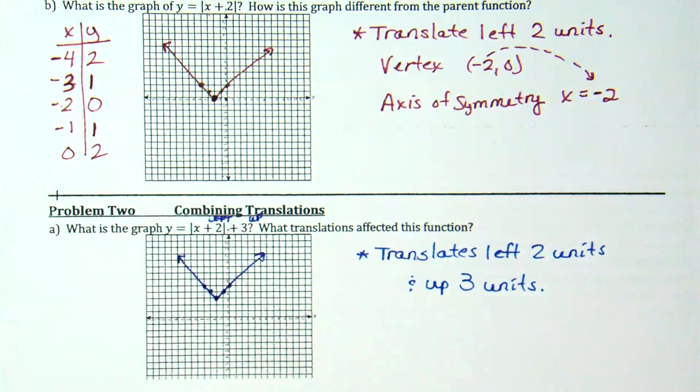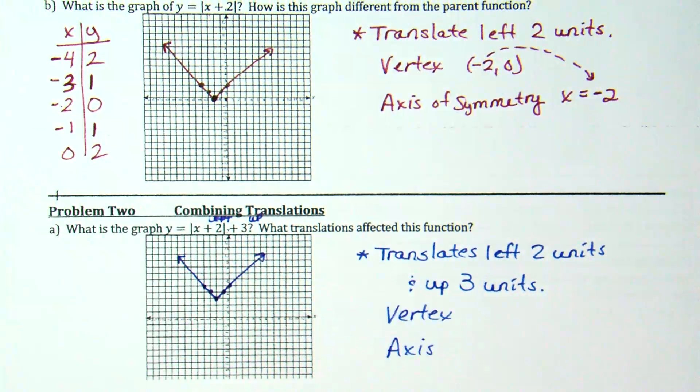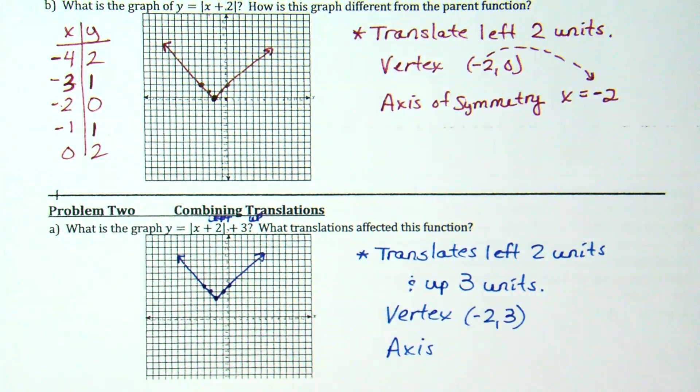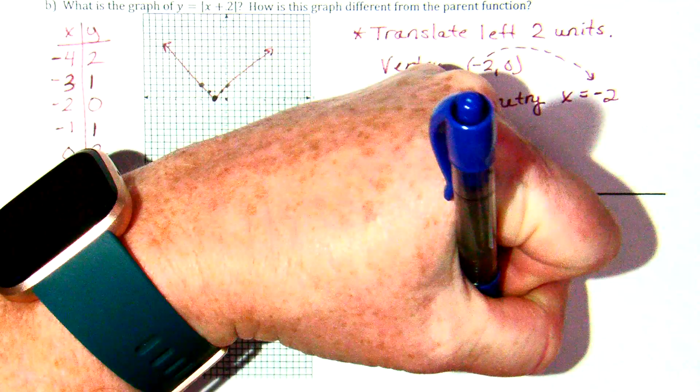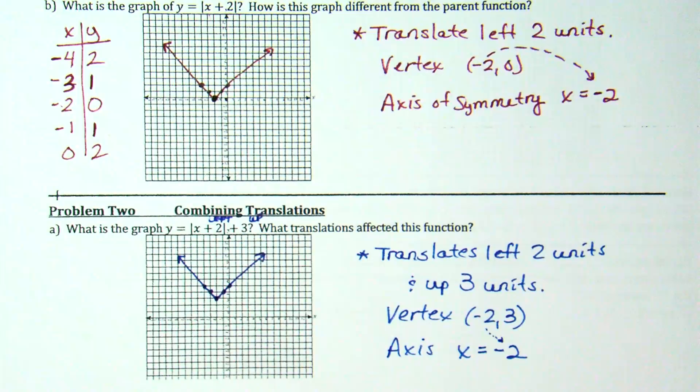Now, two more questions on this problem, and that is the vertex and the axis of symmetry. Where is my vertex of my new V? Negative 2, 3. Because we moved left 2, so that's negative 2. We moved up 3, which is positive 3. Based on the fact that my vertex is negative 2, 3, what about my axis of symmetry? X equals negative 2. My axis of symmetry is always x equals whatever that x value is.